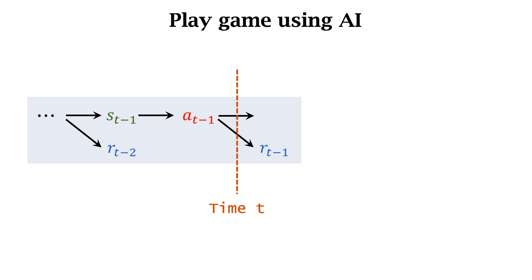At time t, we observe state s_t. Based on s_t, the policy function π makes a decision a_t.